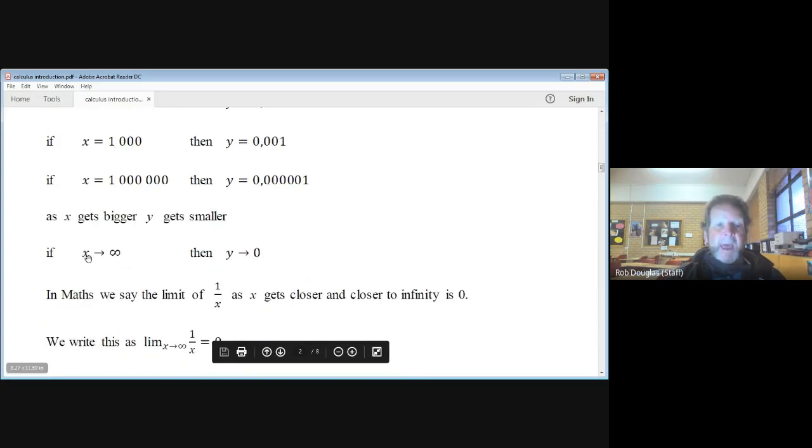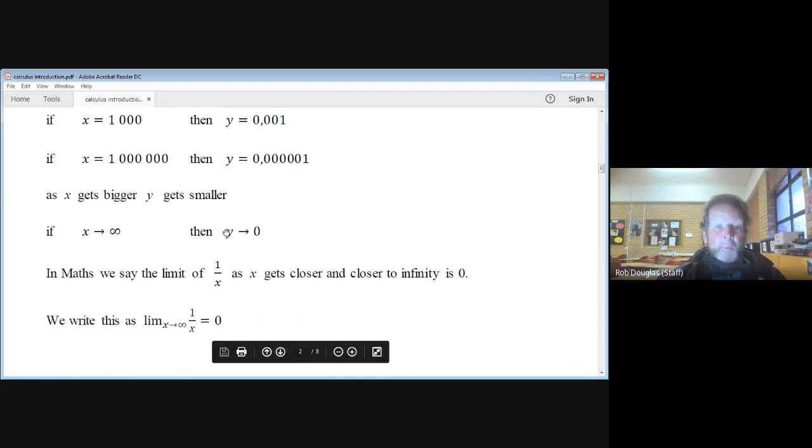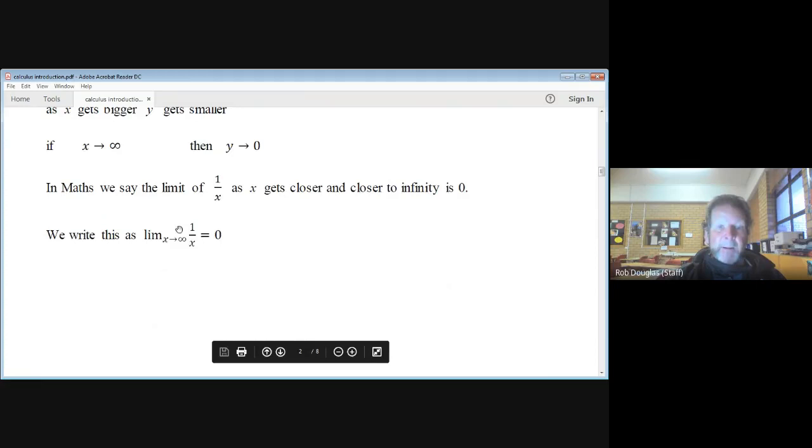Then we can say, as x approaches infinity in one over x, as x approaches infinity, then y approaches zero. Zero is called the limit. The limit of one over x as x approaches infinity is equal to zero. Okay, so that's the big idea. That's all we have to understand: if this gets super big, one over something super big will be really small.